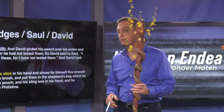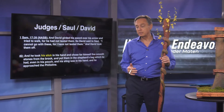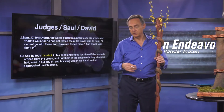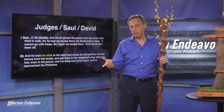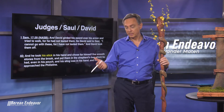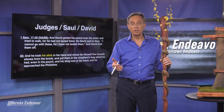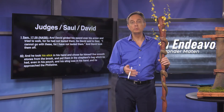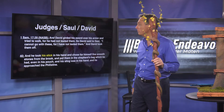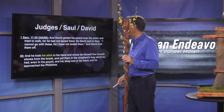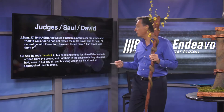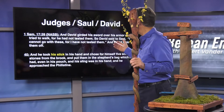Let's look at 1 Samuel 17. David is going to go against the giant Goliath — David is just a youth. He petitions Saul and says he can take Goliath. Saul ultimately agrees, endorsing David as champion of the armies of Israel. The Bible says David girded his sword over Saul's armor and tried to walk, but he had not tested them. So David said to Saul, 'I can't use these — I've not tested them,' and he took them off.